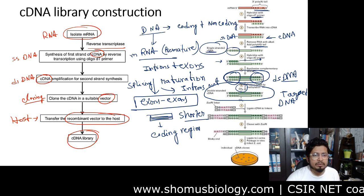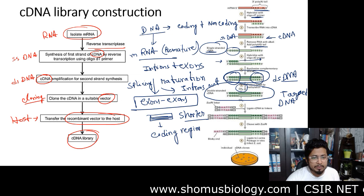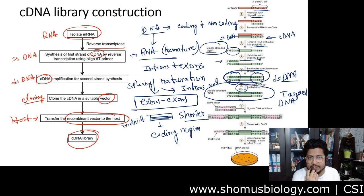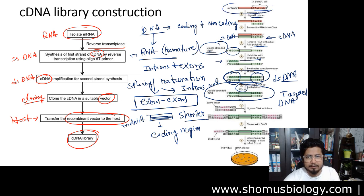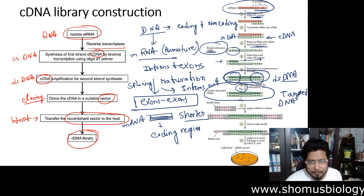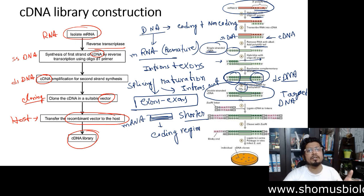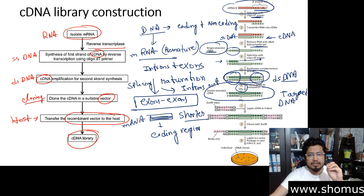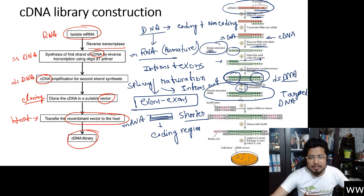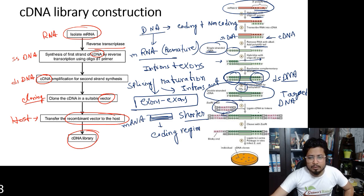That is why, instead of using DNA directly for cDNA library creation, we use mRNA — because the mRNA carries only exons, only coding region sequences. We use that mRNA and convert it into double-stranded DNA via reverse transcription. Once we make the target DNA, it carries information regarding the coding region only. We can then directly clone it using a vector, or attach an adapter sequence at both terminal sites to generate a sticky end.